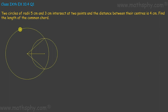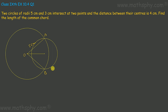We have this circle, the bigger one, whose radius is 5 centimeters. Let's take this as point O, and let's take this as A, and this as B. And this is the smaller circle.